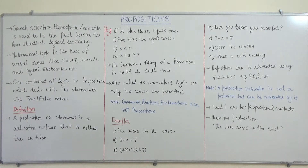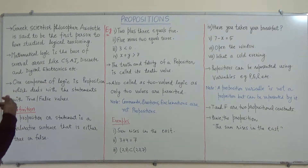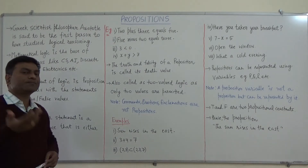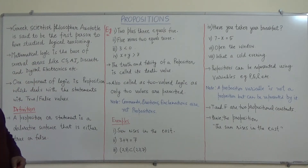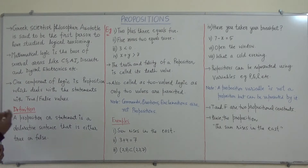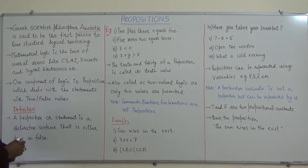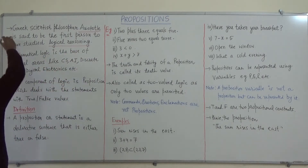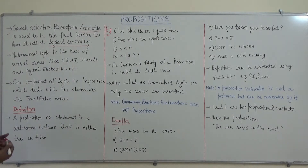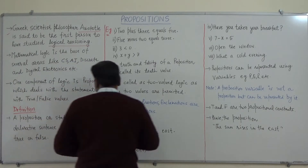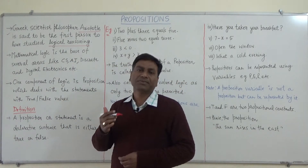If we talk about propositions, this is part of mathematical reasoning or logical reasoning. The journey of this proposition started around 2,200 to 2,300 years back, with the great scientist and philosopher Aristotle. The Greek philosopher Aristotle is said to be the first person who studied logical reasoning, and mathematical logic has its base from this work.